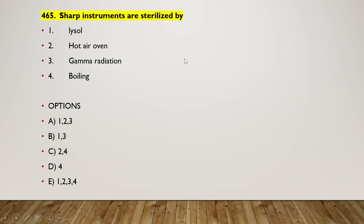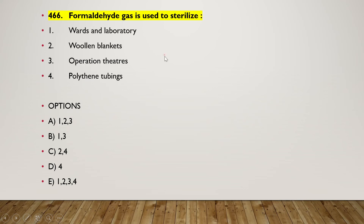The next question: sharp instruments are sterilized by lysol, hot air oven, gamma radiation, or boiling. The right answer is option A — one, two, and three — lysol, hot air oven, and gamma radiation are used to sterilize sharp instruments, not boiling.